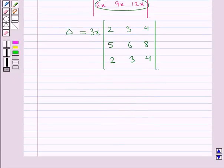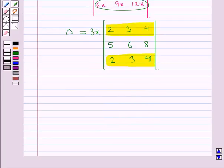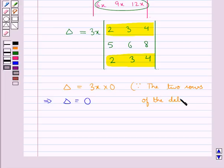Now in this determinant, as you can see that the first and the third row are identical, then the value of this determinant would be 0. Therefore we have delta is equal to 3x into 0, which means that delta is equal to 0. And the reason for this is since the two rows of the determinant are identical.